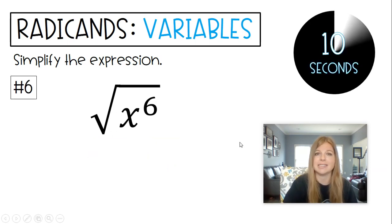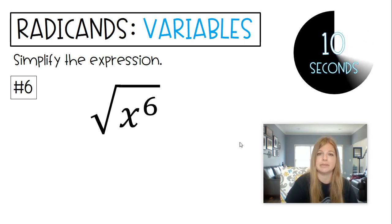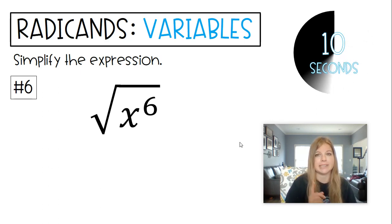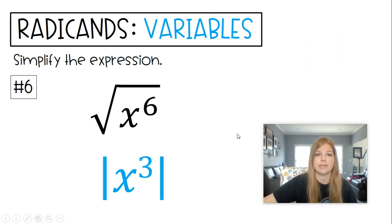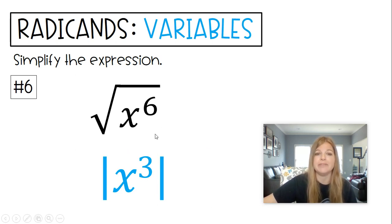Square root of x to the sixth — a nice even exponent. Remember the special rule that has to happen here. The answer is x to the third, but with absolute value bars: the absolute value of x to the third. When you go from even to odd, notice we just took half of six to get three. Square root of x to the sixth is x to the third. Even to odd gets those absolute value bars.